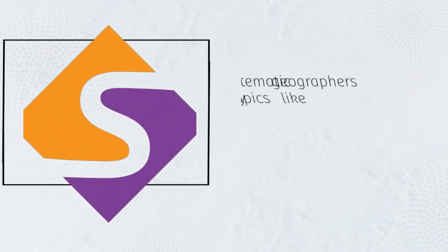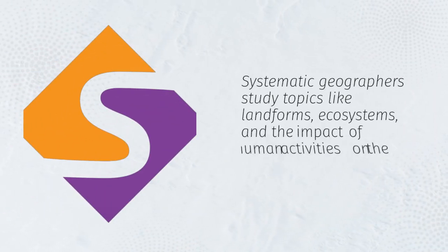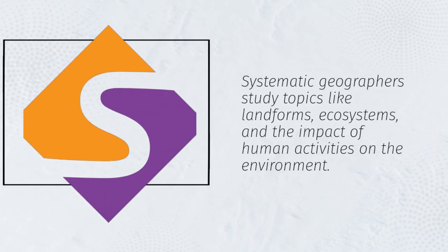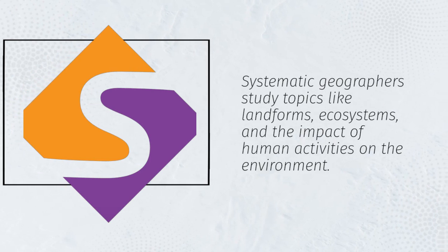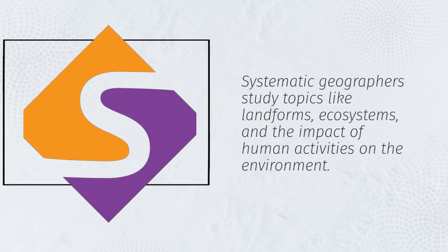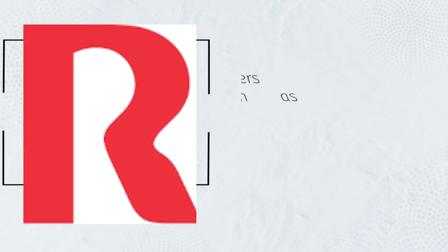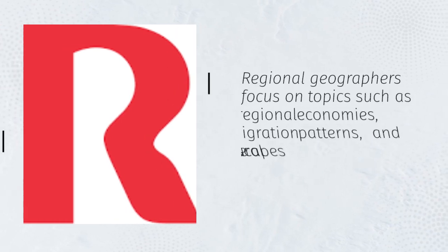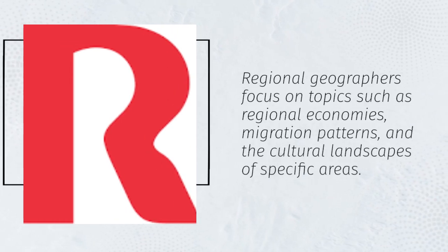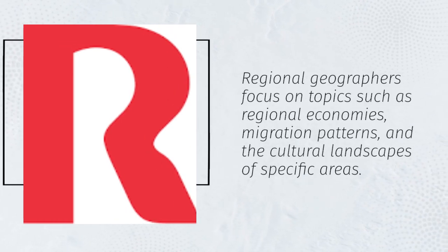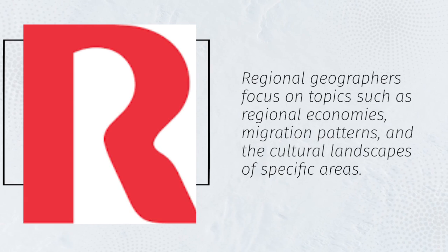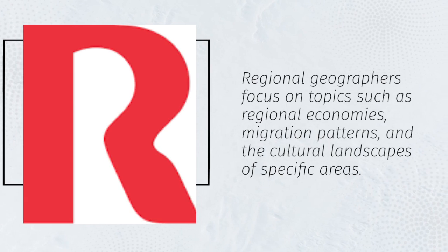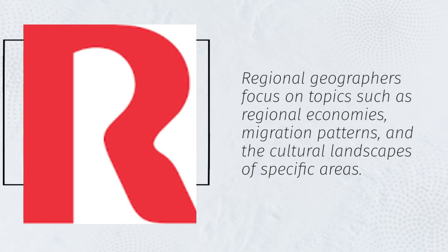Systematic geographers study topics like landforms, ecosystems, and the impact of human activities on the environment. Regional geographers focus on topics such as regional economies, migration patterns, and the cultural landscapes of specific areas.